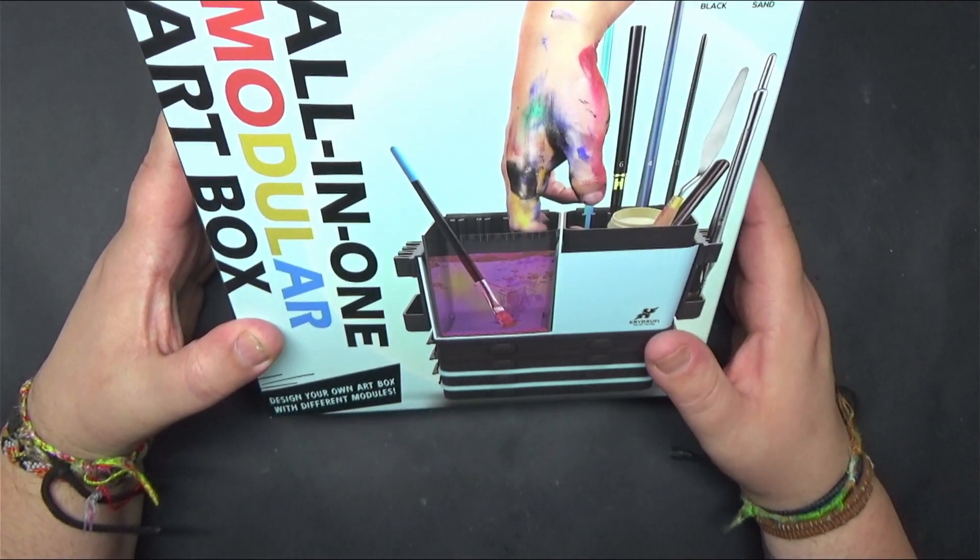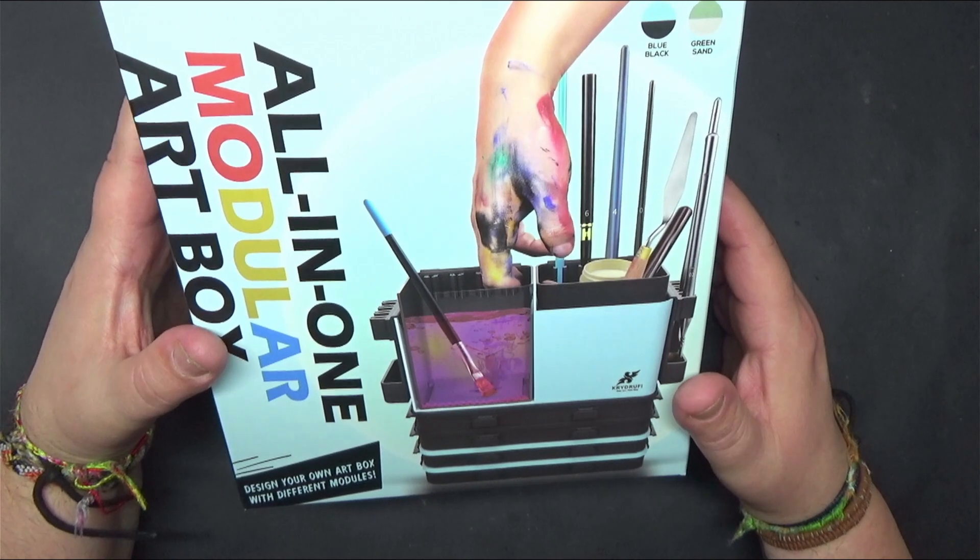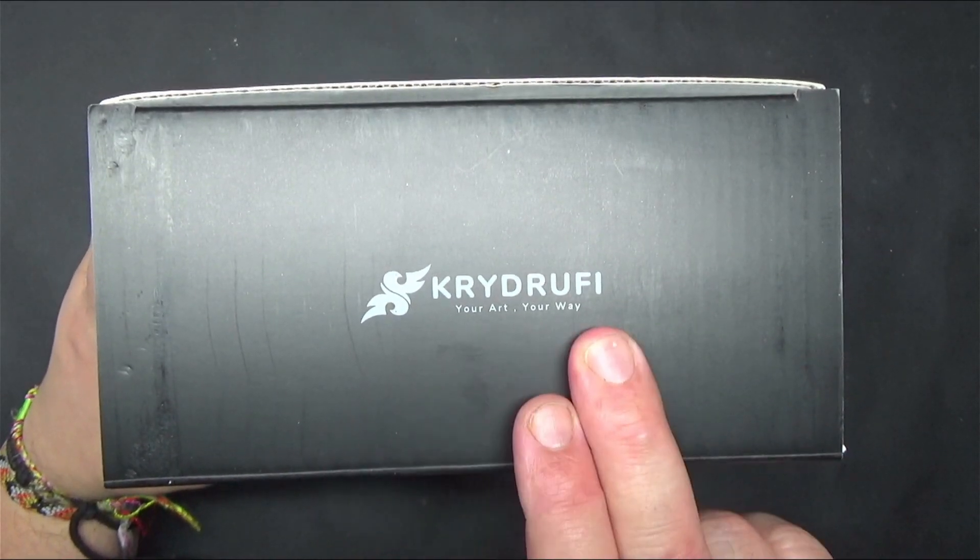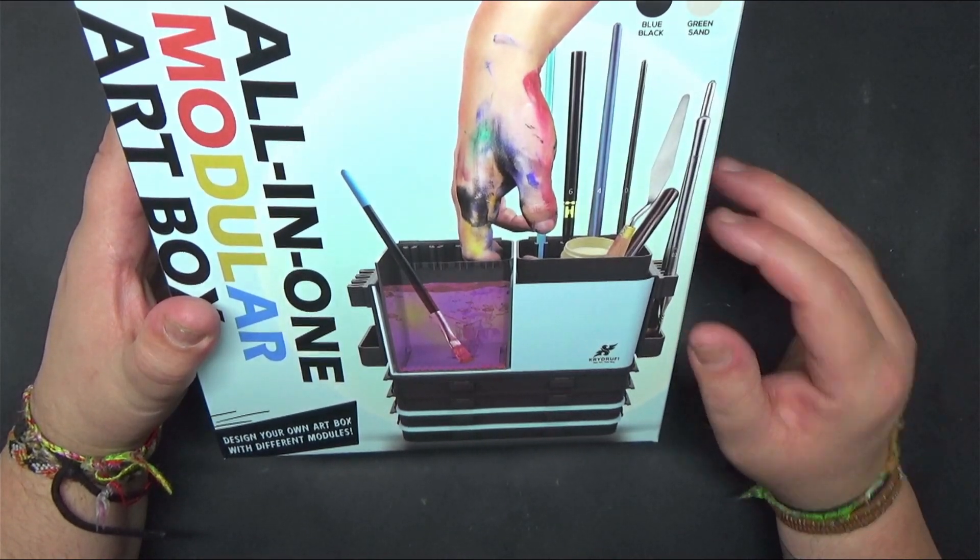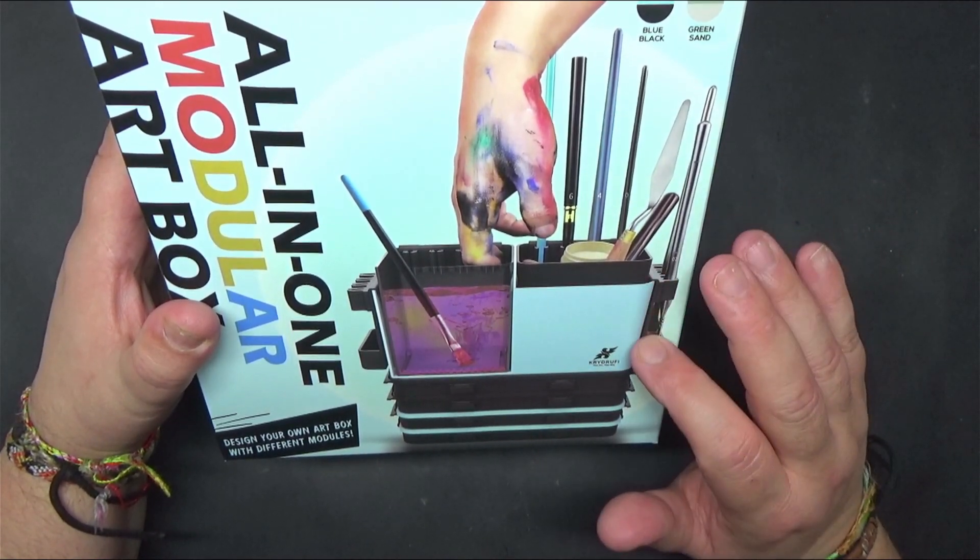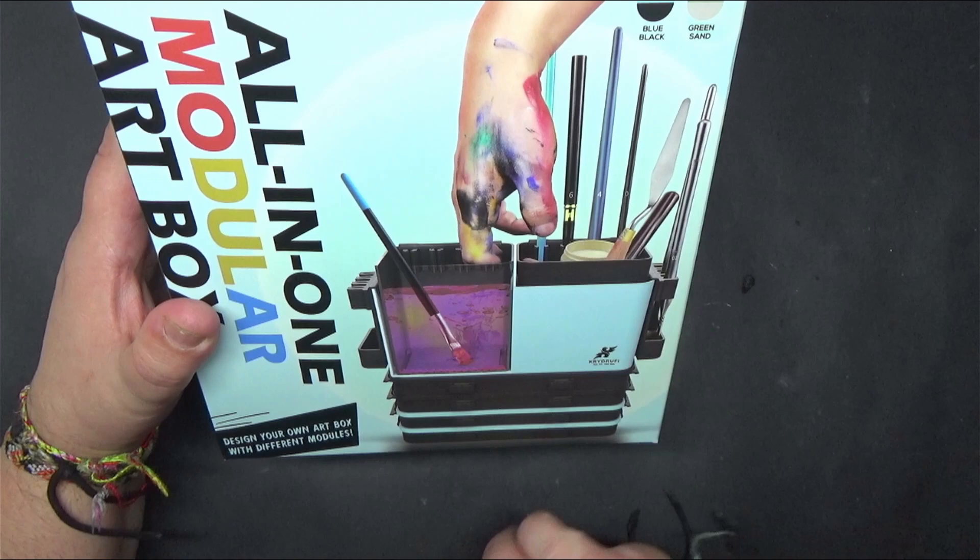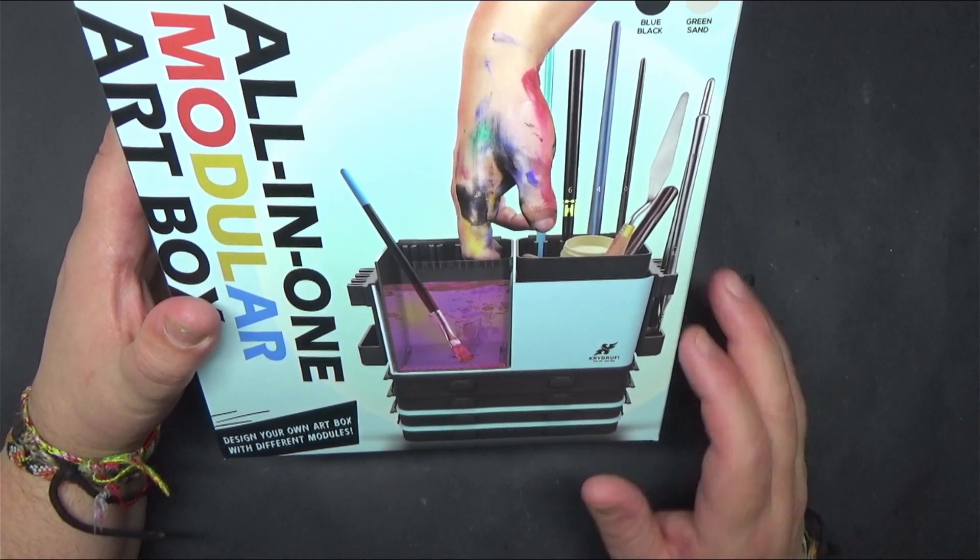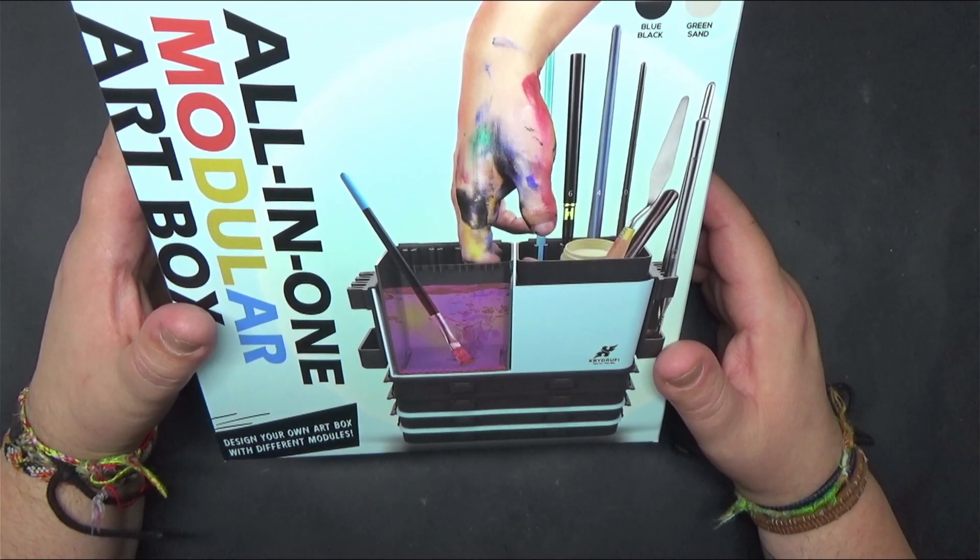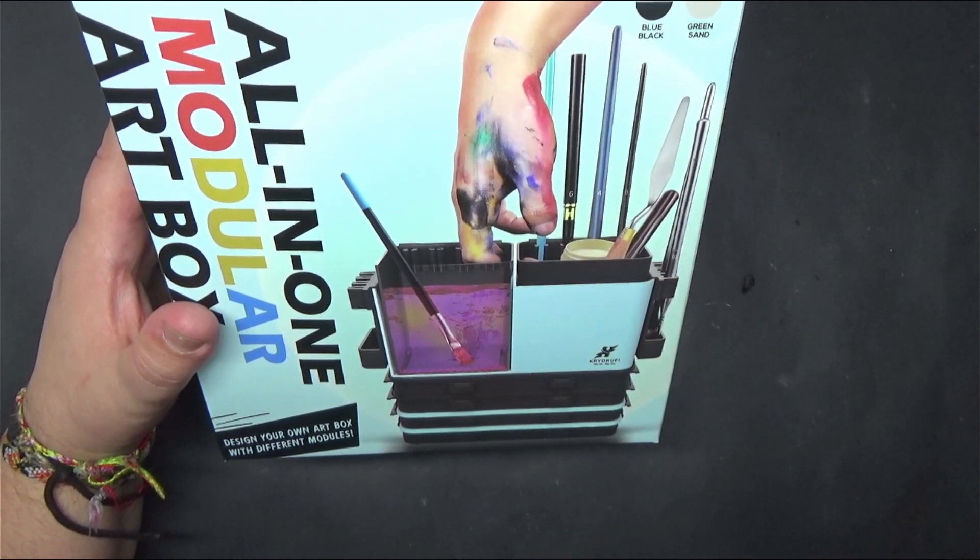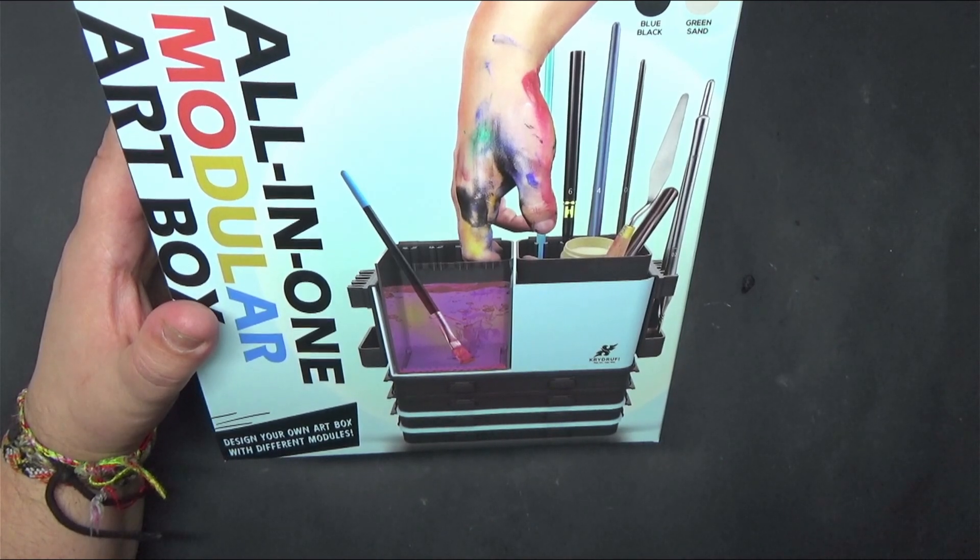This is our art box with different modules from Crytrufi and it's supposed to have paint brush holders, water tanks, wet palettes, and paint storage. Let's look inside the box and see what's coming. I'll see you guys in a bit.